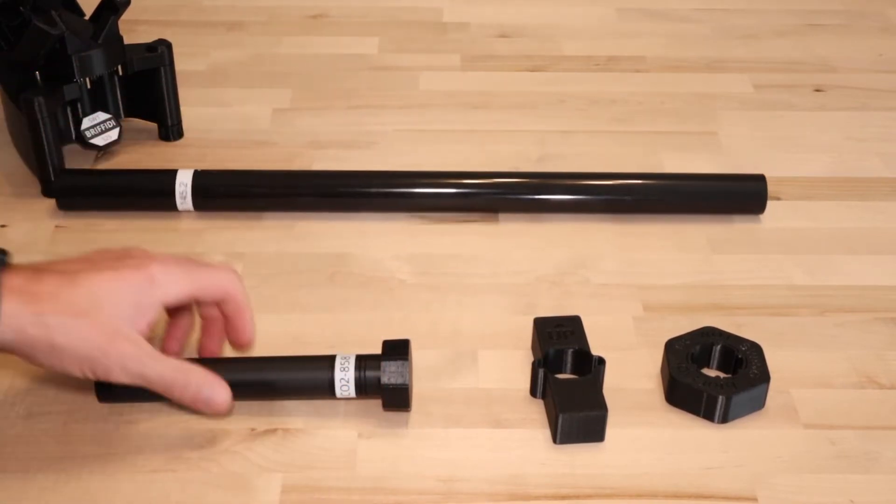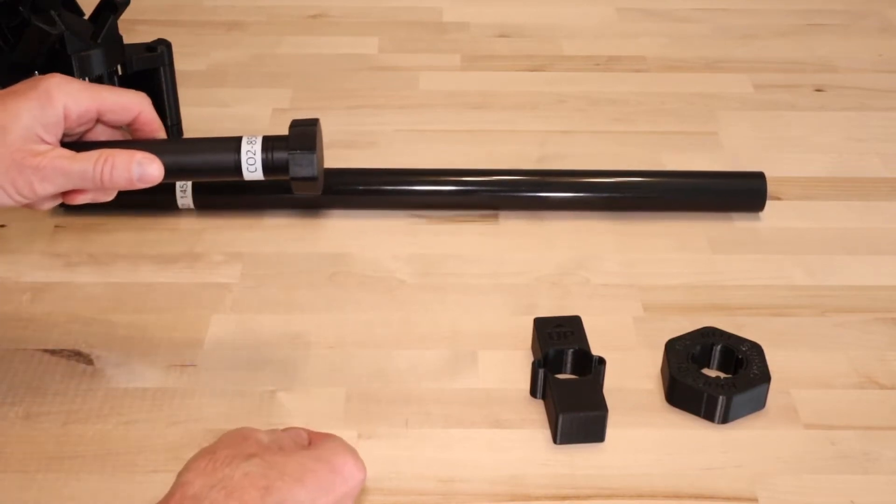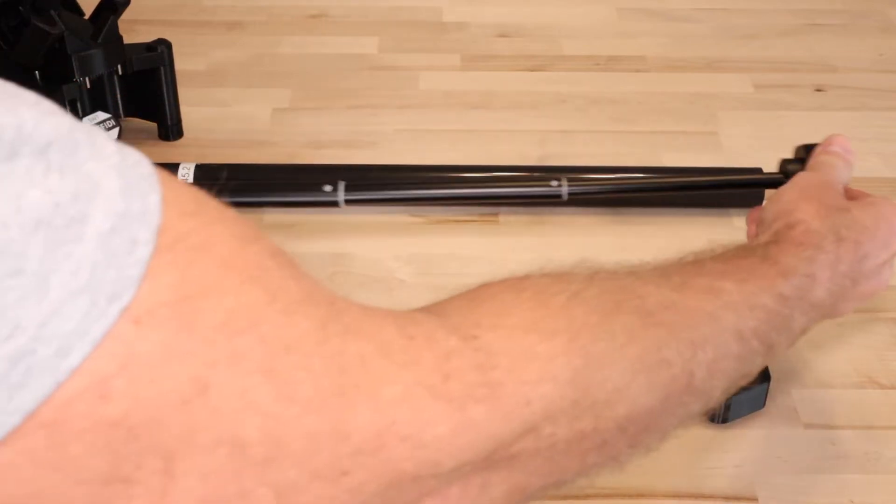The second type is an extendable rod with permanent weight. It also has two configurations. Number one is fully retracted and number two is fully extended.